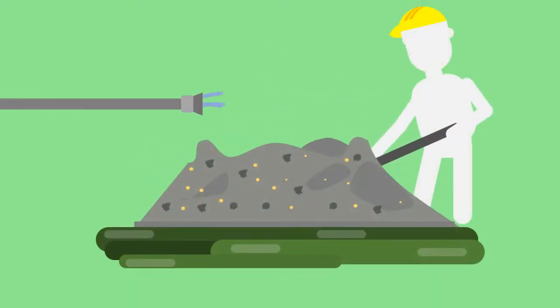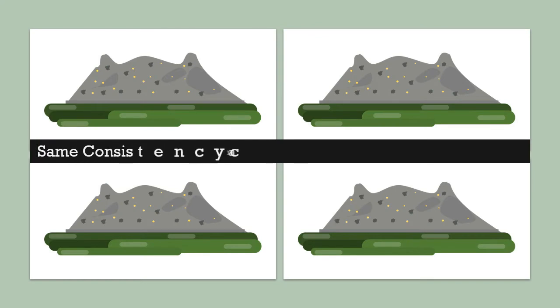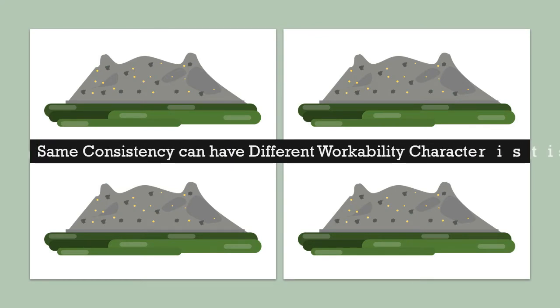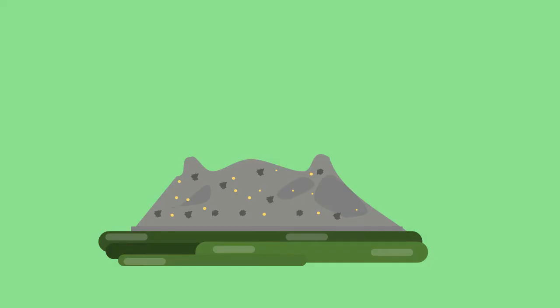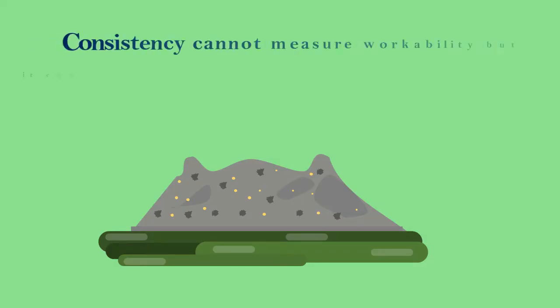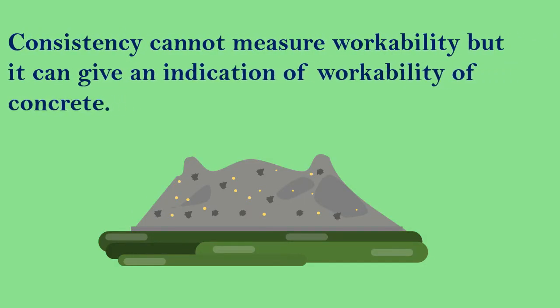The consistency of fresh concrete is controlled by the amount of water which is added to the mix. However, different concrete mixes with the same consistency can have different workability characteristics. In general, consistency cannot measure workability, but it can give an indication of the workability of concrete.